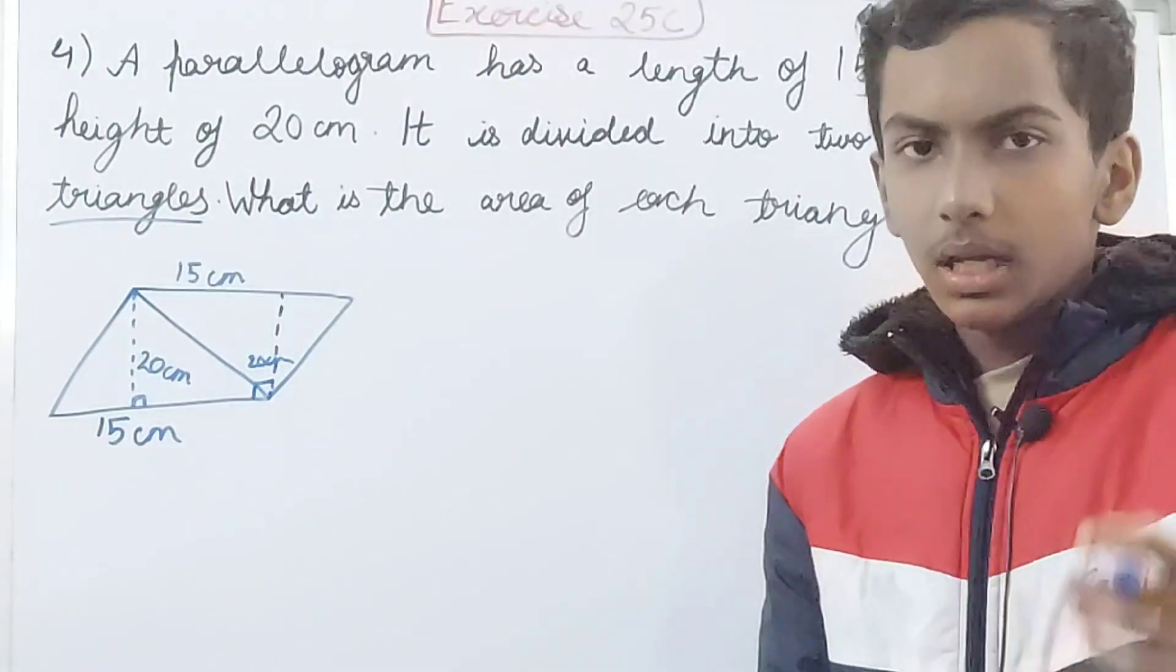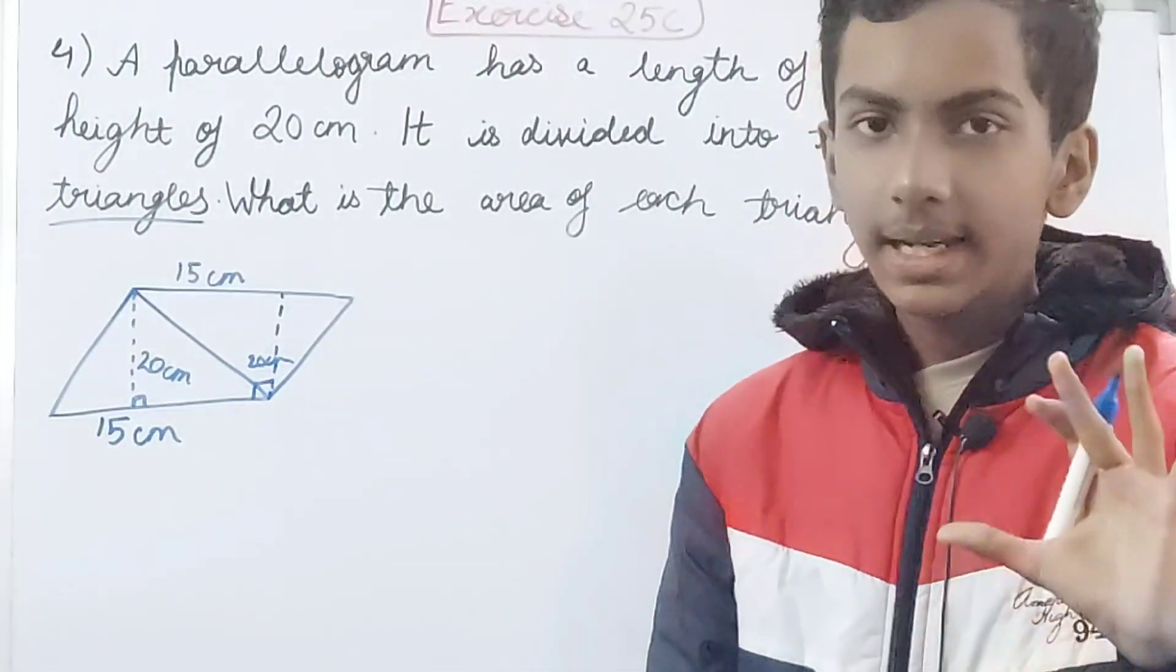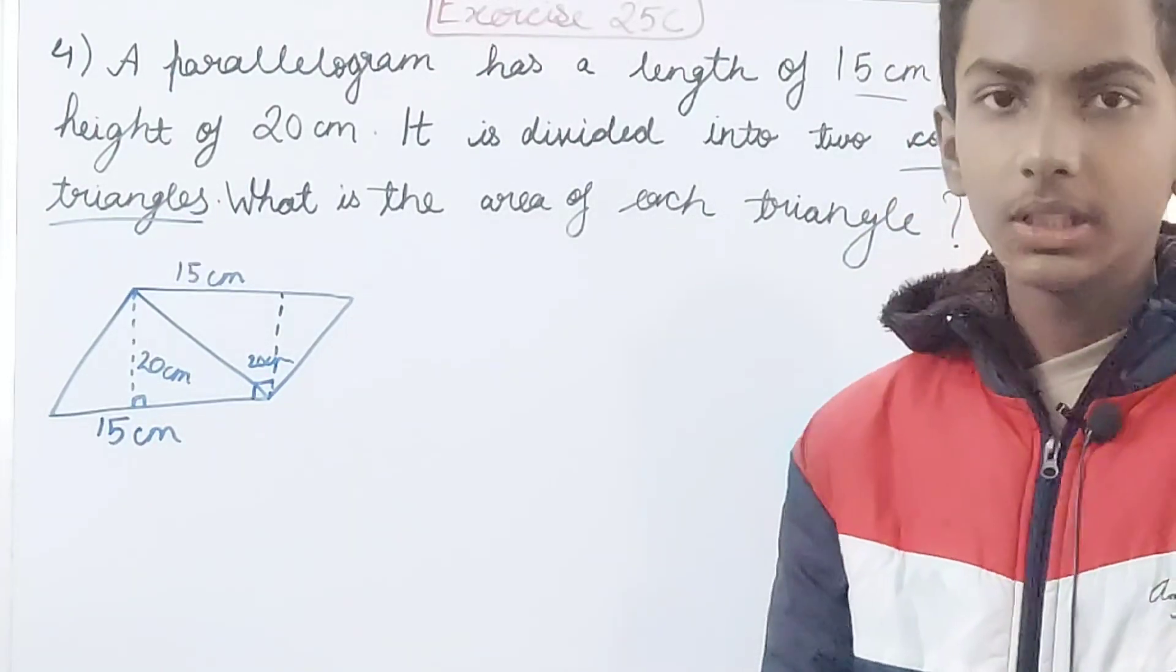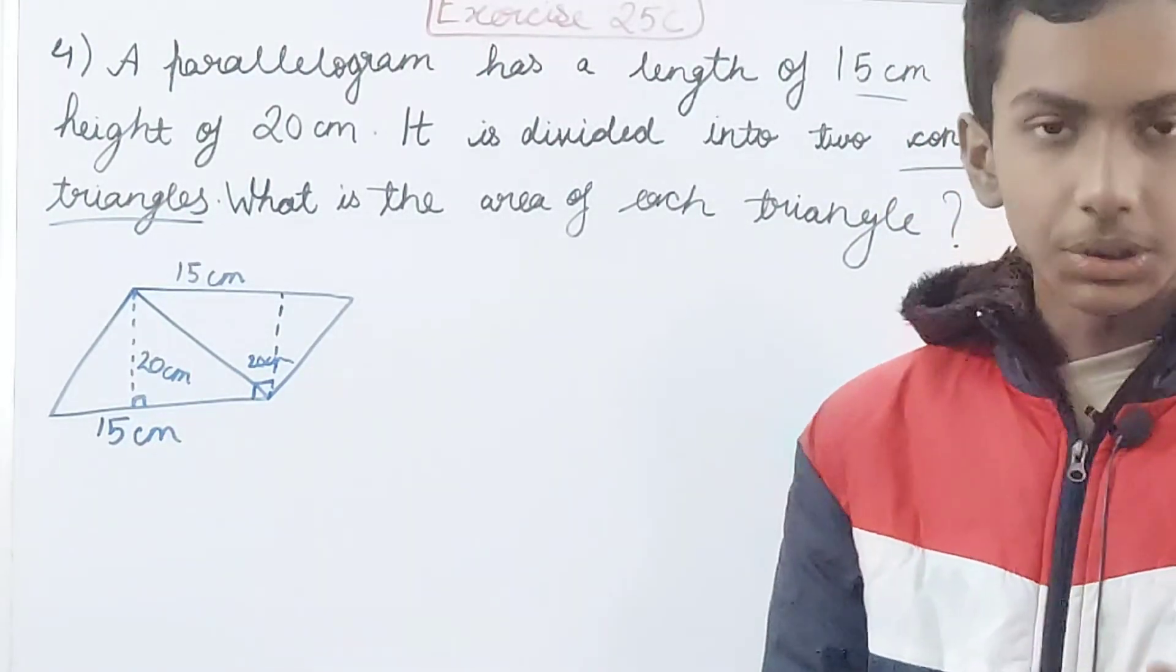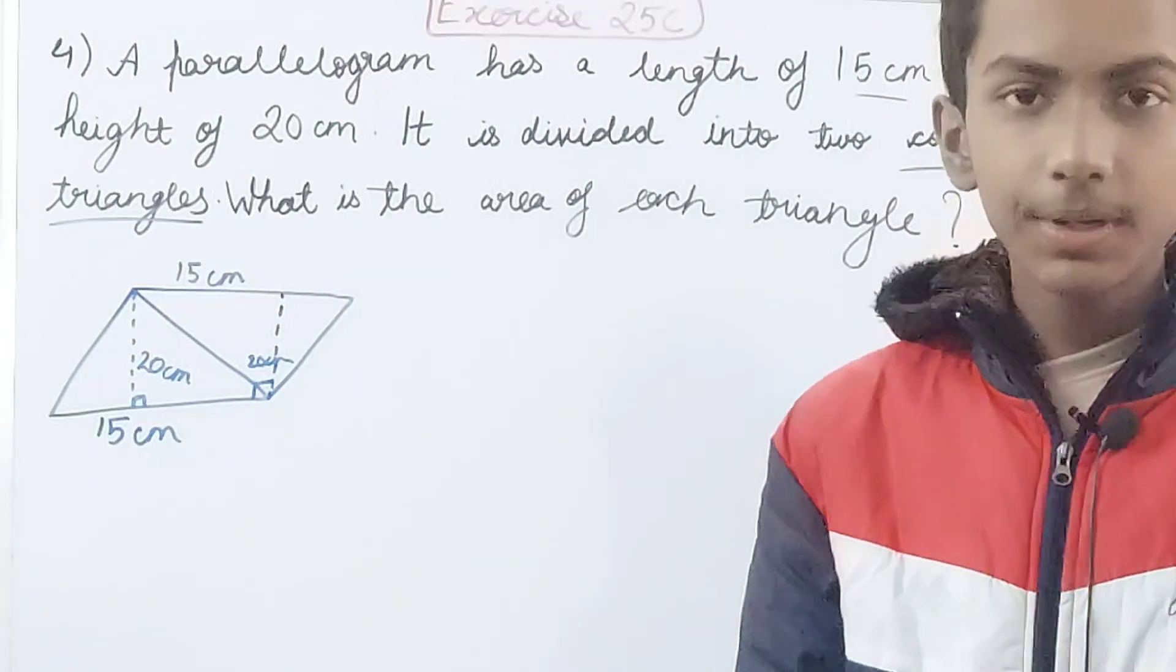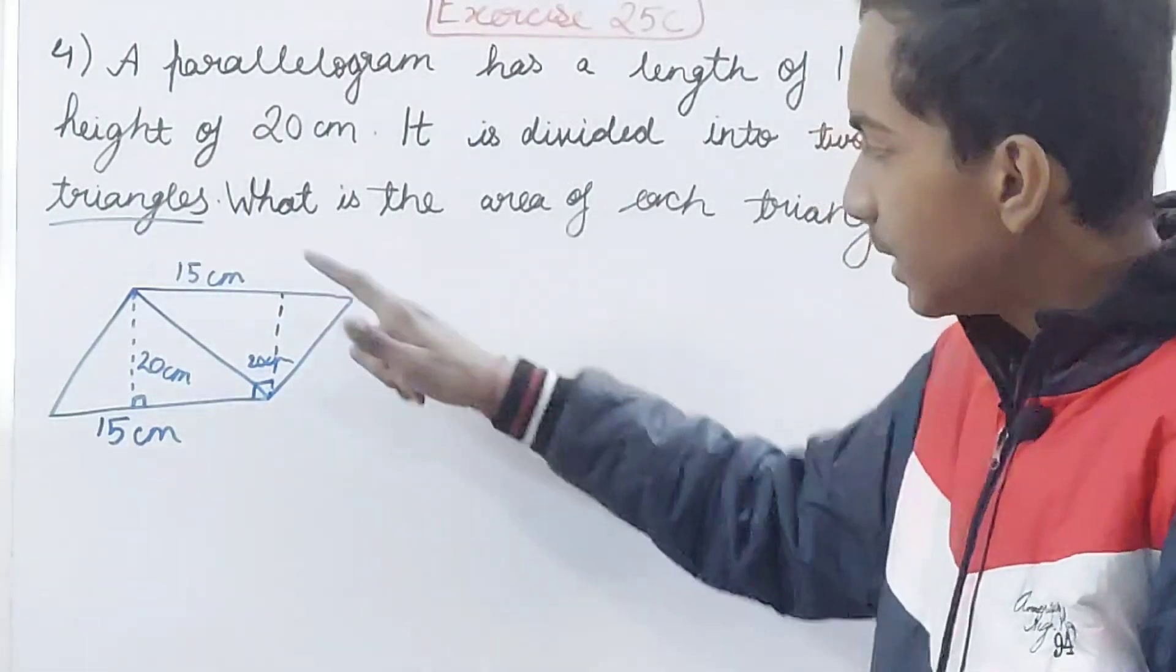Congruent triangle means two identical triangles, it can be through the sides, through the angles, but it is identical with each other in the dimensions.